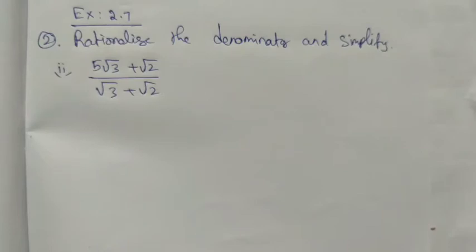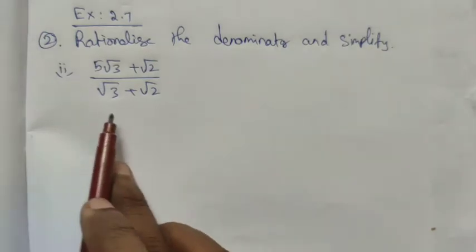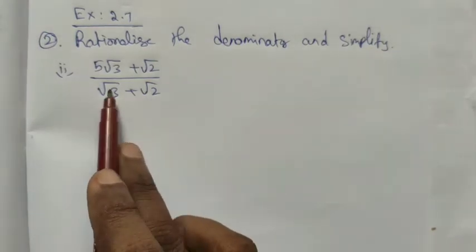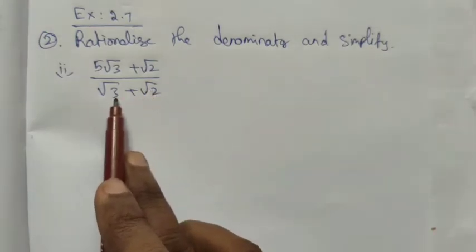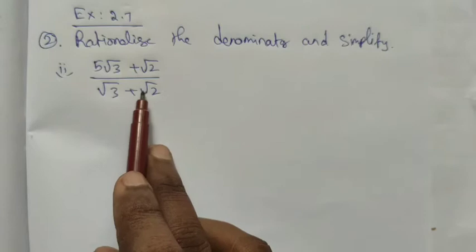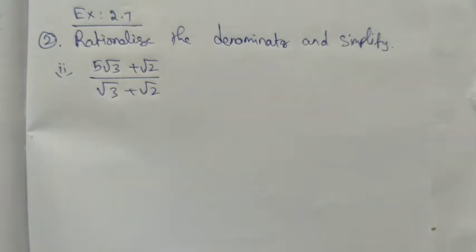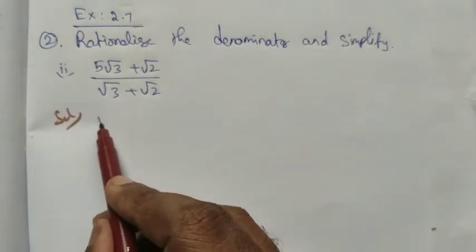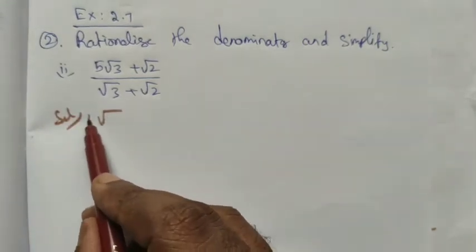Hi students, Class 9, Exercise 2.7, Question 2: rationalize the denominator and simplify. Roman number 2 — we want to cancel the denominator, so we have to convert it into a rational number. For the solution, we want to take the conjugate.